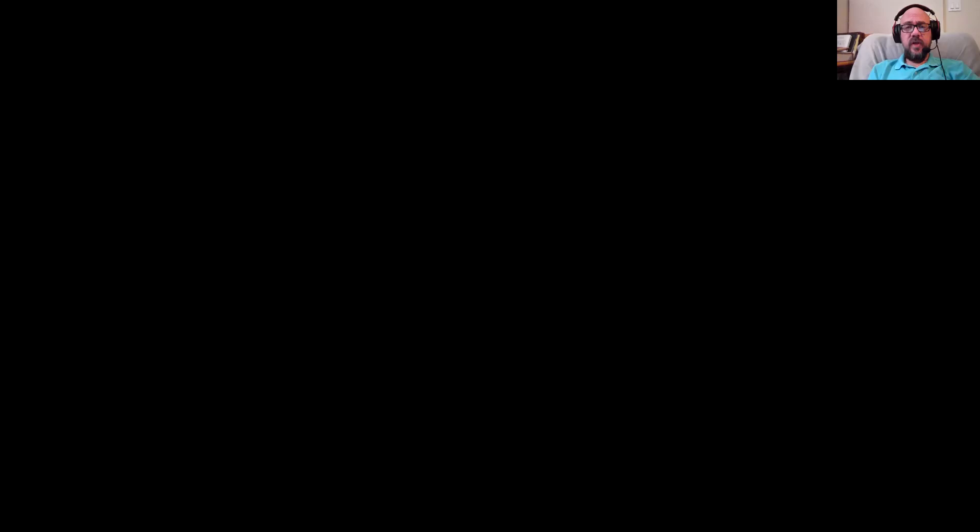Poisson random variables are really interesting. They actually have a really interesting history that I will very briefly relate here. Poisson was a French mathematician who studied probability theory, and he came up with this density function that basically said, here is this thing that could be a probability density function.